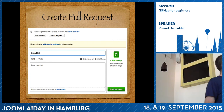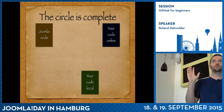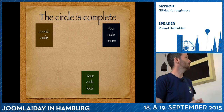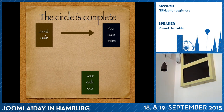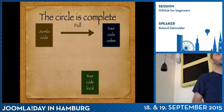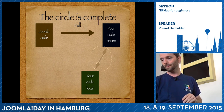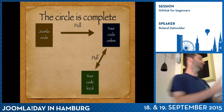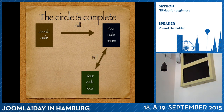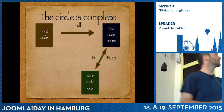Once you're done writing your comment, click 'Create Pull Request' — that sends a message to Joomla: 'I have new code, please accept me.' And then the circle is complete: we forked the Joomla code to your code online, we cloned it to your code local, we can push code back online, and we can also push it back to your online copy.